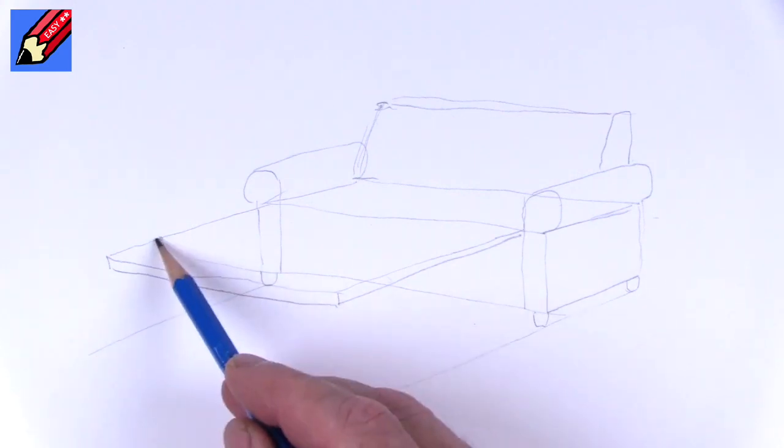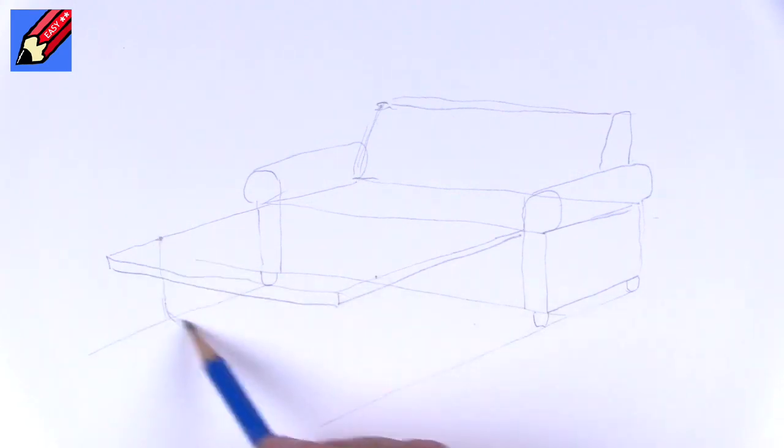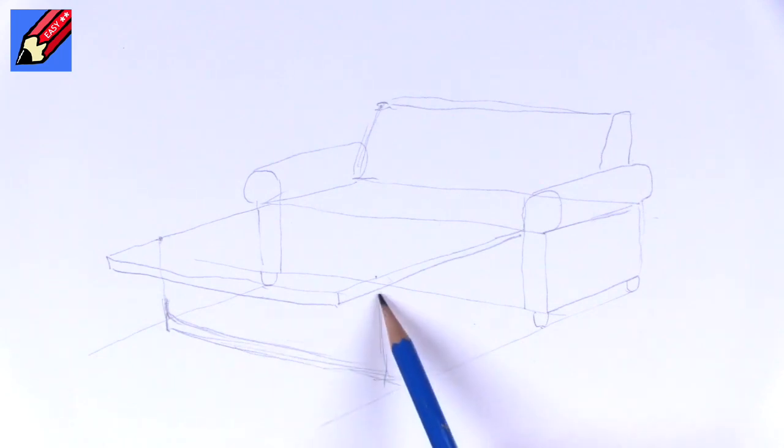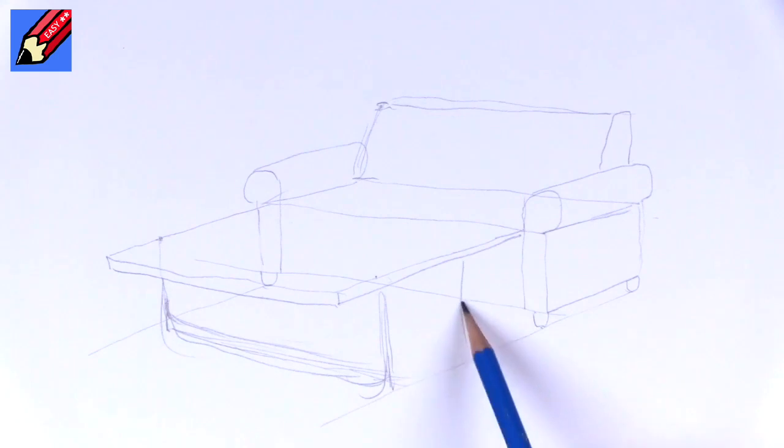Now we're going to have the bottom bed rest thing, the thing that it rests on like that. So that wants to be there, that sort of feeling, and that should be more like that because we're wanting to keep parallel, aren't we. So that will be coming like that. This one will come down there, so we've got sort of two of these things coming down like that.